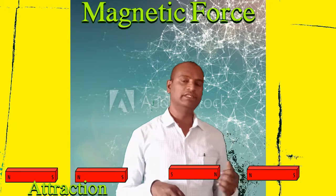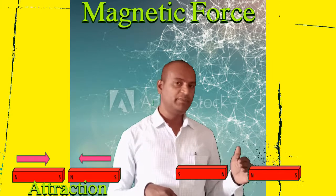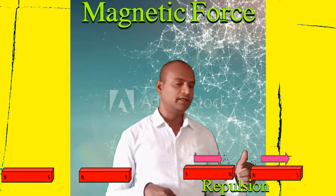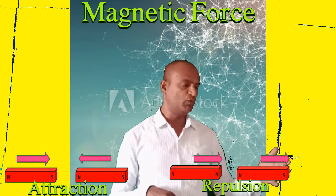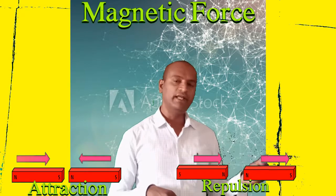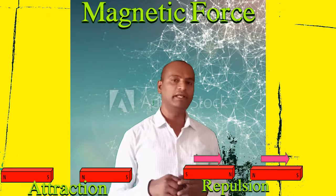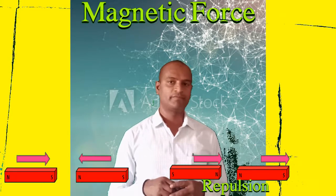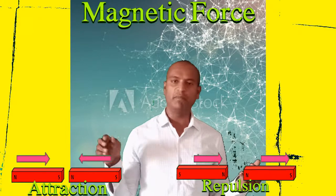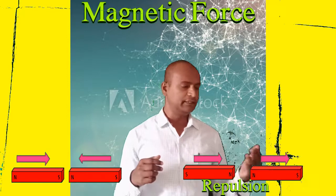Now observe this case: when you bring similar poles of a bar magnet towards another bar magnet, they repel each other — the magnets move away from each other. Why do they repel? Because like poles repel each other. In both cases, there is no contact between the magnets, yet in one case they attract and in the other they repel.